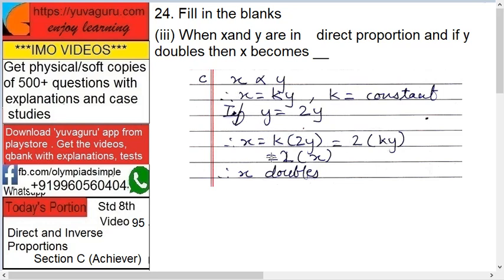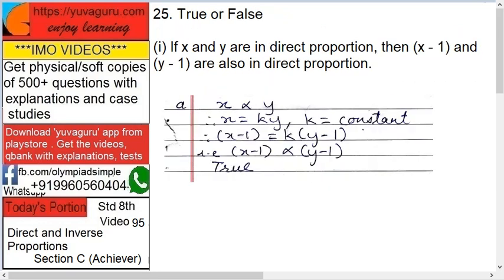Here X and Y direct proportion, both should be in the numerator. Therefore X equals K Y, K is a constant. Now Y, what Y becomes? It becomes double. So Y equals 2Y. So X equals K into, instead of Y, what will you write? 2Y.